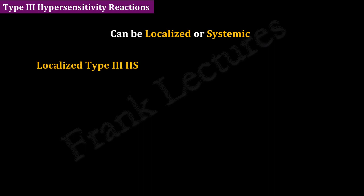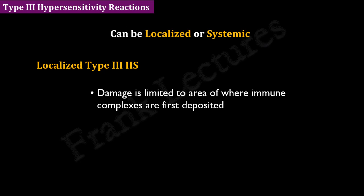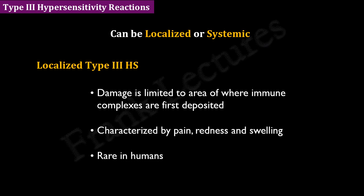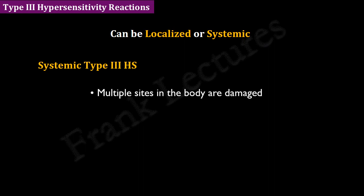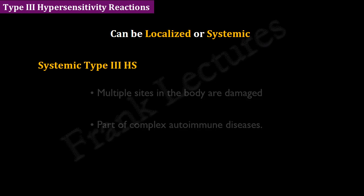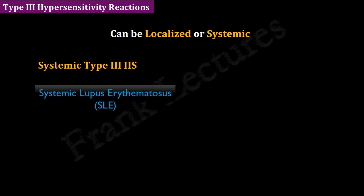In localized type 3 hypersensitivity, the damage is limited to the area where immune complexes are first deposited. Local tissue damage is characterized by pain, redness, and swelling. These reactions are not so common in humans. In systemic type 3 hypersensitivity reactions, the symptoms may appear at sites distant from the original site of antigen-antibody contact, and multiple sites may be affected. Systemic reactions are part of complex autoimmune diseases — for example, systemic lupus erythematosus.